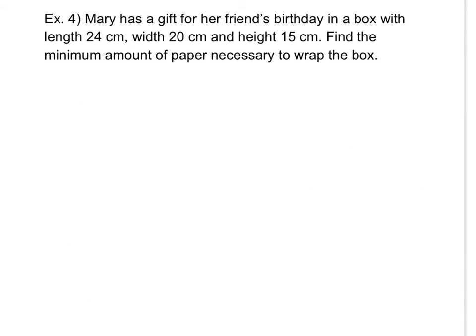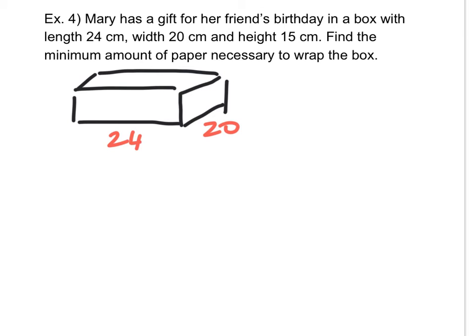Next. Mary has a gift for her friend's birthday in a box. That should be a rectangular box by the way. A rectangular prism shaped box. So the length is 24. The width is 20. And the height is 15. So length 24. It says the height is 15. And the width is 20. So it's going to look something like that. Don't worry about how accurate your drawing is. You're just trying to draw something so that you'll have a visual kind of representation of the question. So what you have is 24, 20, and 15. So I'll put the 15 out here just to make it clearer. Just there.